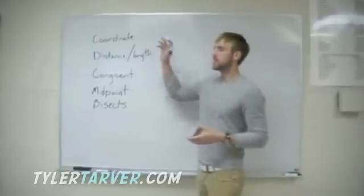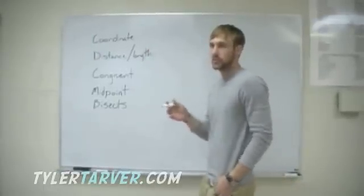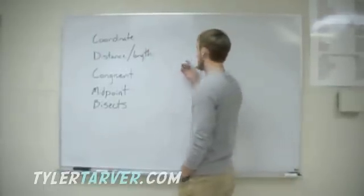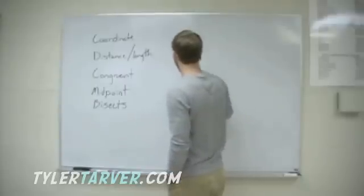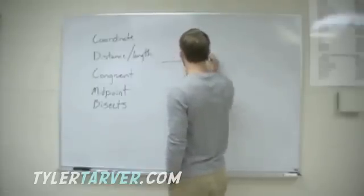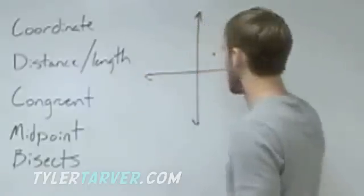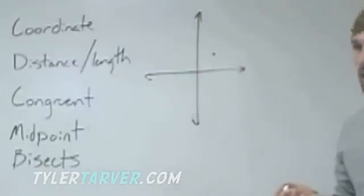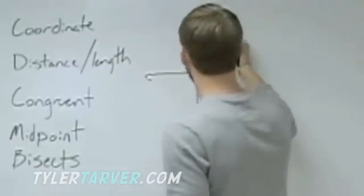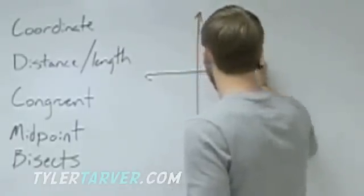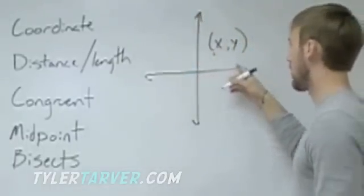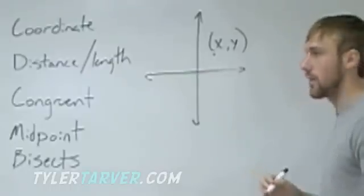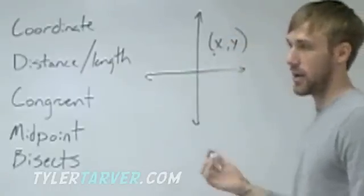First thing we want to talk about is a coordinate. Yesterday we talked about points, a coordinate is just a point on a graph. Usually your graphs look like this. A coordinate is just a point somewhere on there. Coordinates have an X and a Y. X tells us how far we go over to the right or left. Y tells us how far we go up or down.